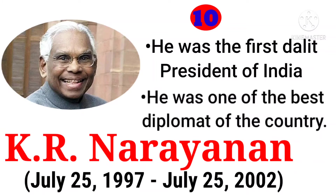K.R. Narayanan was the President of India from 25th July 1997 to 25th July 2002. He was the first Dalit President of India and one of the best diplomats of the country.